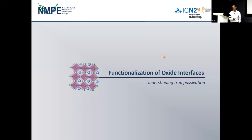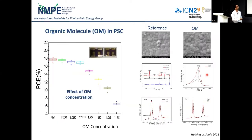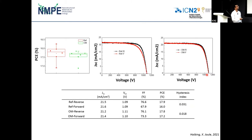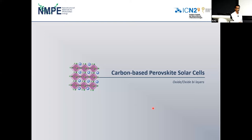Another example in the group is the functionalization of oxide interfaces using ligands. Additive engineering has been a focus, using different types of ligands to bind 2D perovskite to 3D perovskite and oxide to 2D structures. For example, Hypinggia and Carlos Perera succeeded in fabricating perovskite solar cells with an additive that significantly decreases hysteresis while achieving impeccable performance with almost no performance loss after 1000 hours.